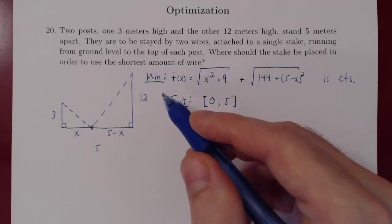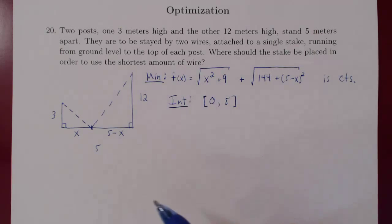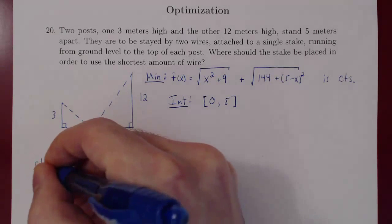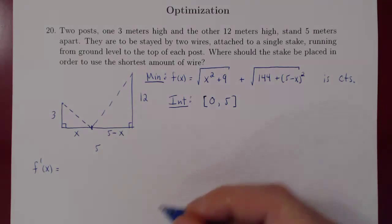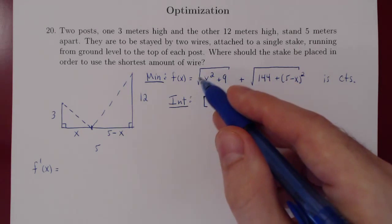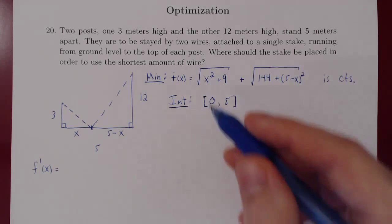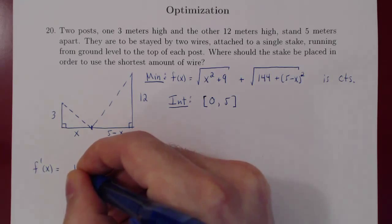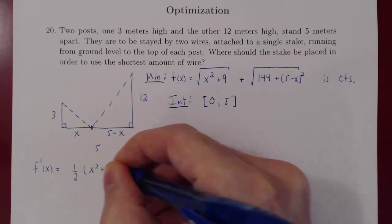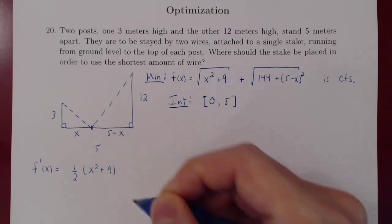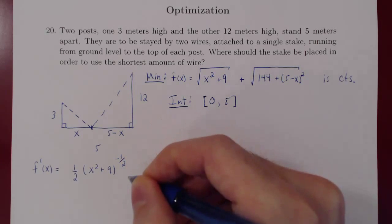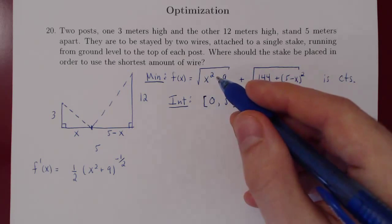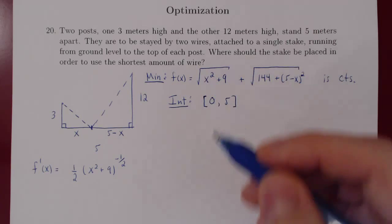So we know that to maximize and minimize this function over a closed and bounded interval, we simply have to evaluate the function at the left-hand endpoint, the right-hand endpoint, and at the critical points inside the interval. All we have to do now is find the critical points of our function. Let's differentiate. Think of it as a power of 1/2 and use the chain rule. We get (1/2)(x² + 9)^(−1/2) times 2x.